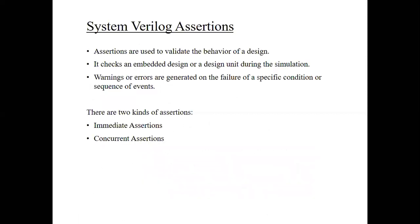The next part is assertions. Assertions are used to detect the behavior of a design, similar to an if-fail statement. An assertion checks a condition or expression and evaluates and debugs the design unit or displays statements about the unit. It simply checks an embedded design or a design unit during the simulation period. Warnings or errors are generated on the failure of a specific condition or sequence of events — meaning we can display warning messages, error messages, or success statements using assertions. There are two kinds of assertions: immediate assertions and concurrent assertions.